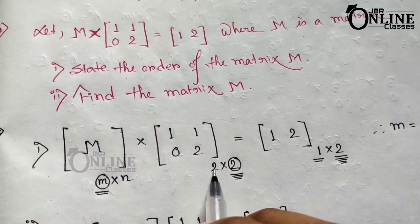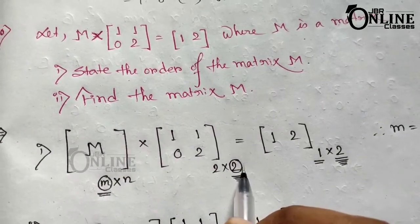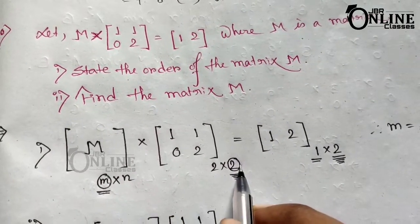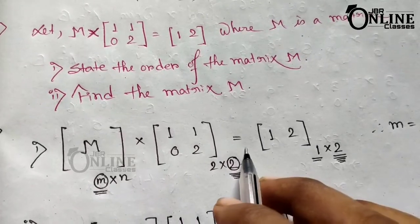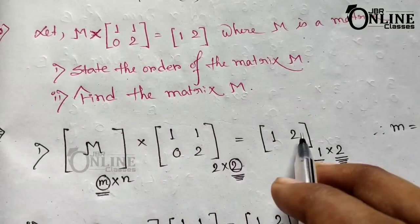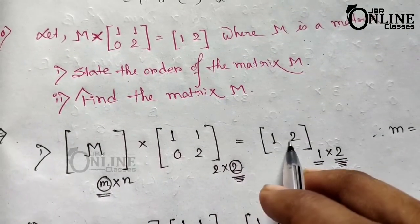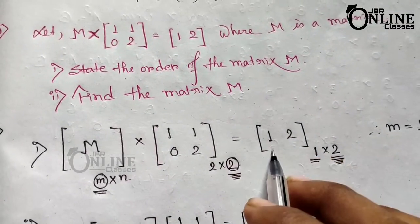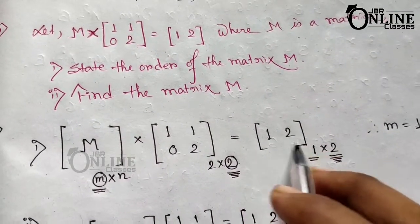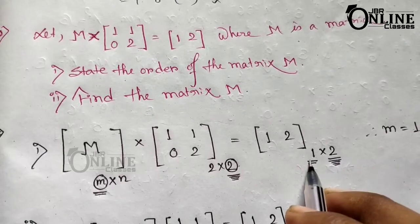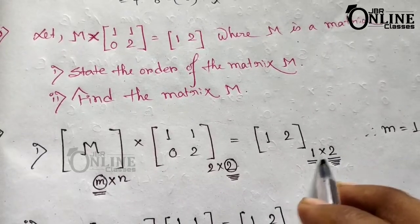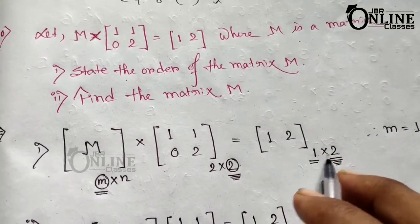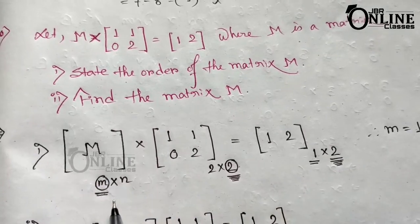M multiplied by the 2-by-2 matrix [1, 1; 0, 2] equals [1, 2], which is a row matrix with 1 row and 2 columns — so it's a 1-by-2 matrix. Therefore the order of this result matrix is 1 by 2.